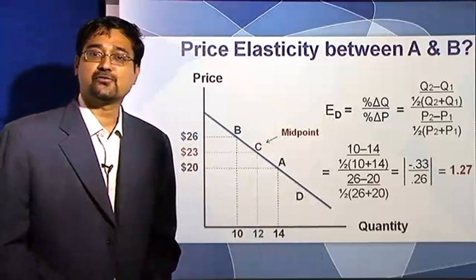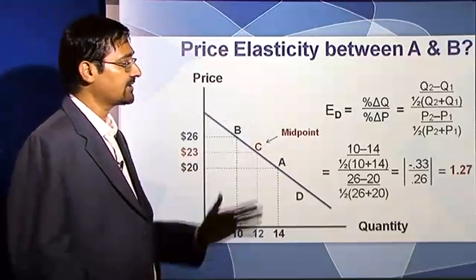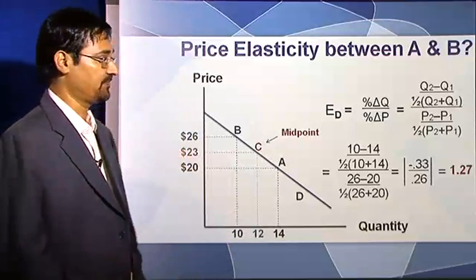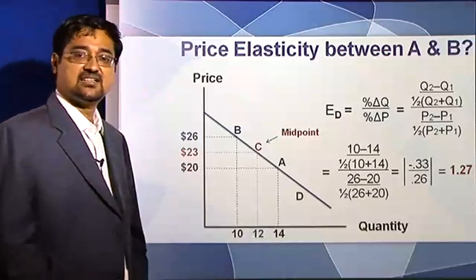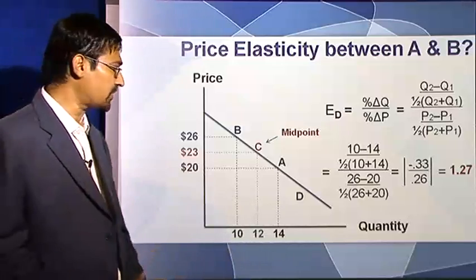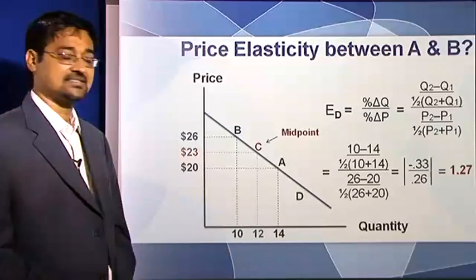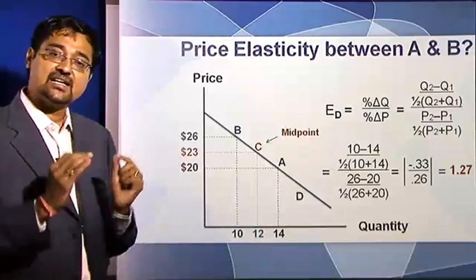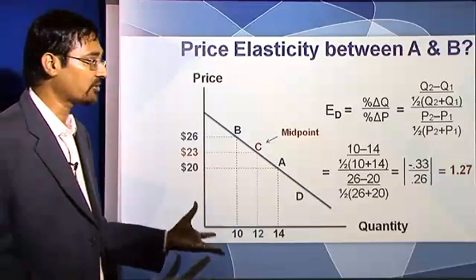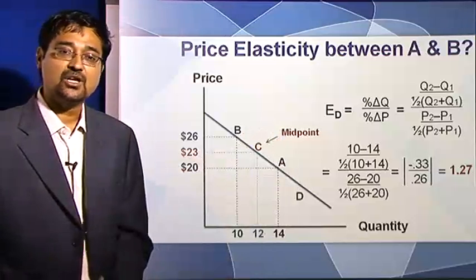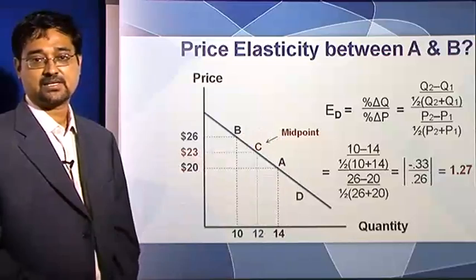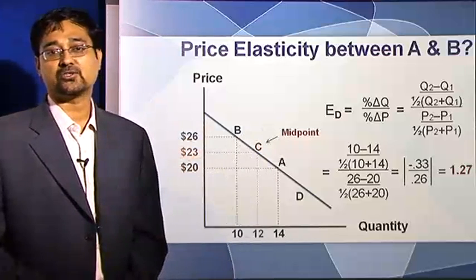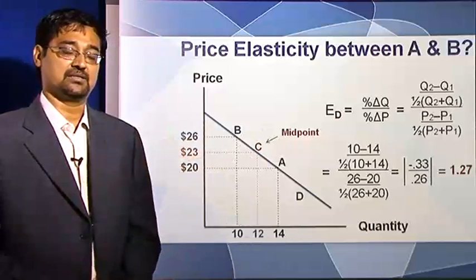Using the equation from the previous slide, elasticity of demand is percentage change in quantity divided by percentage change in price. The change in quantity: it used to be 14 and came down to 10. The change in price: it was $20 and went up to $26. Whenever elasticity of demand is computed, we always look at the absolute value — we ignore the negative sign. Therefore, the elasticity comes to 1.27. Let us stay with this number, 1.27.